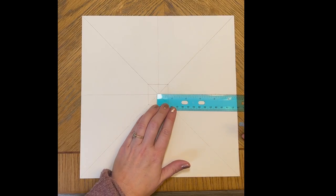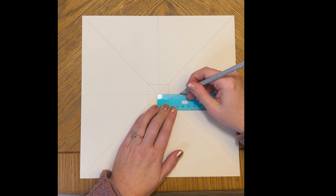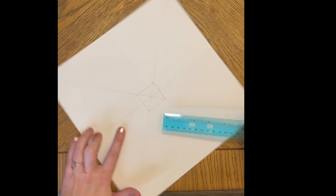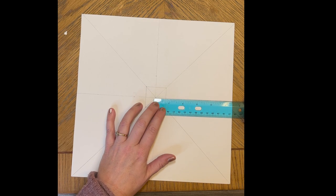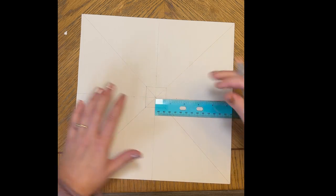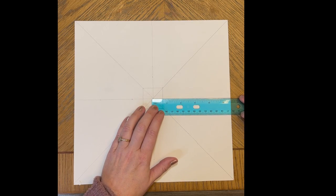And then we will measure out an inch and a half on those four lines. I found an inch and a half gives me the best perspective because some of these will eventually become our vanishing points.